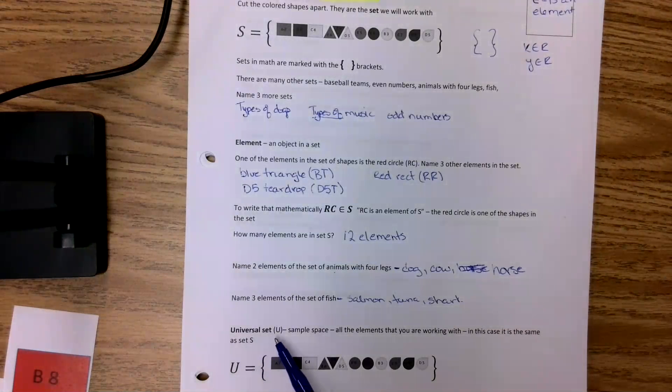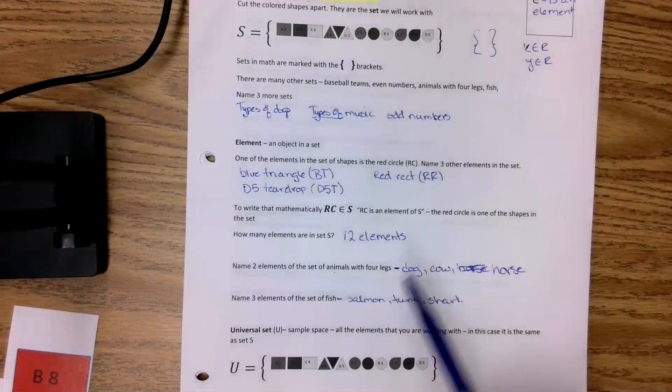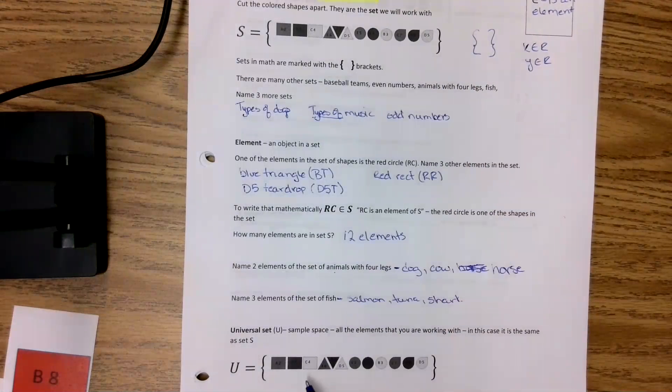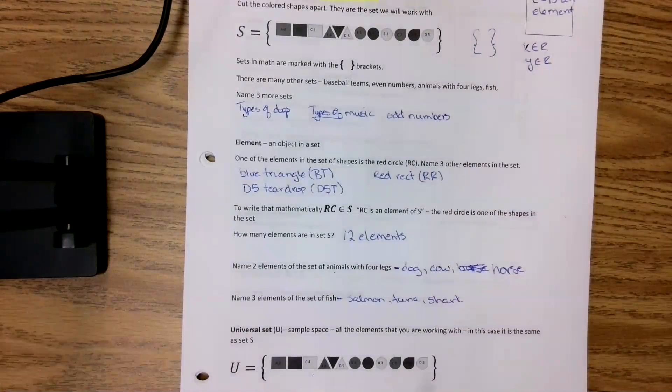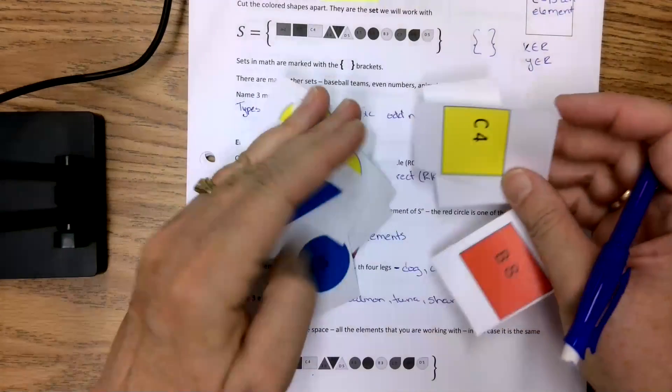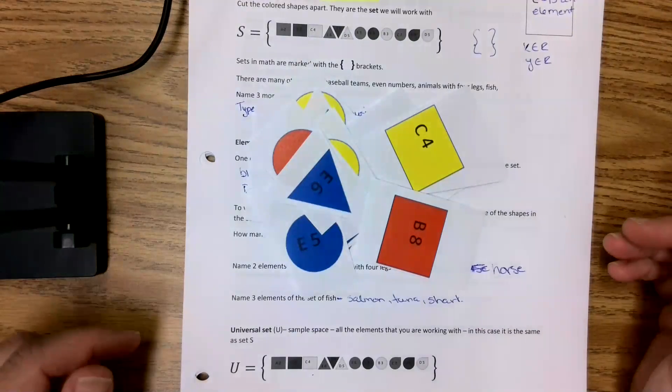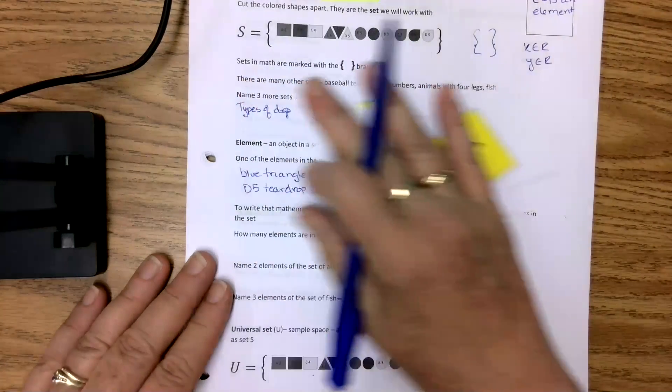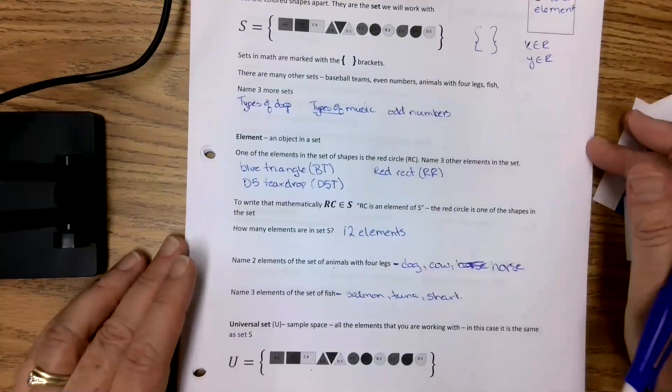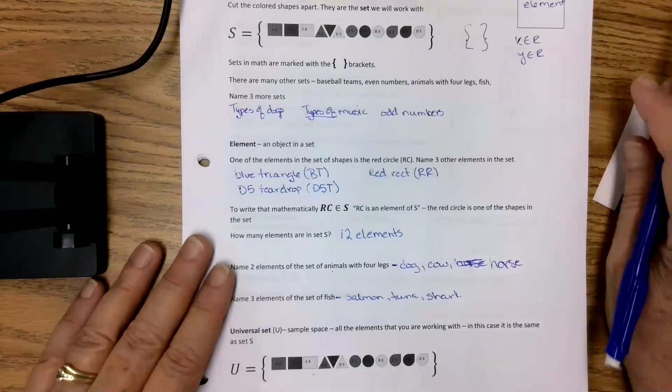All right. The universal set U is the same as the sample space and it's all the elements that you're working with. So in this one, my set S and my U are exactly the same thing. These are all the different shapes I get to work with. And ta-da. I guess that's a very short video. Have a great day.